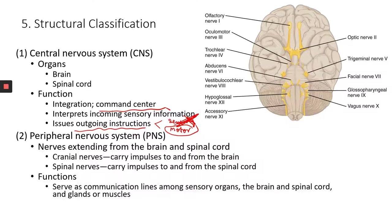The outgoing signals are sent in the form of electrical impulses through motor nerves into the effector — which could be a muscle or could be a gland.